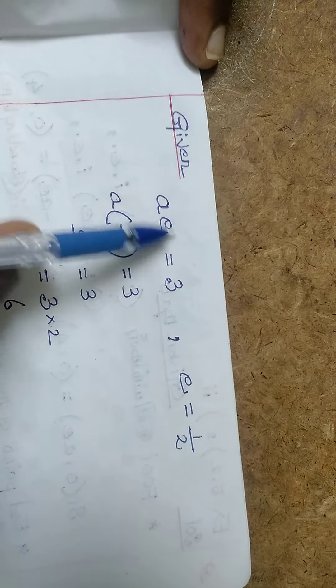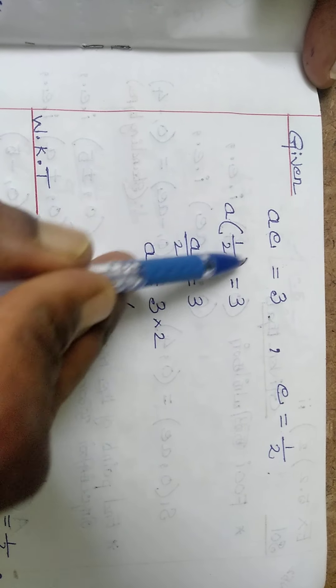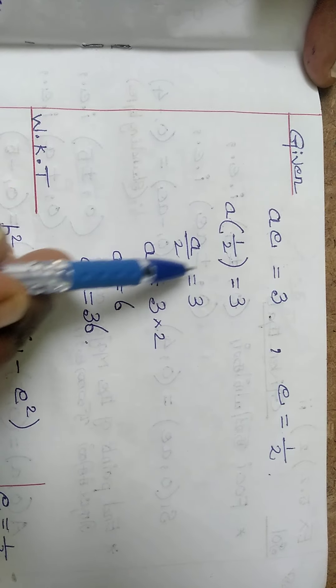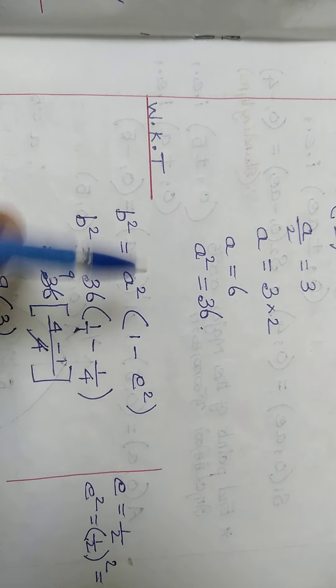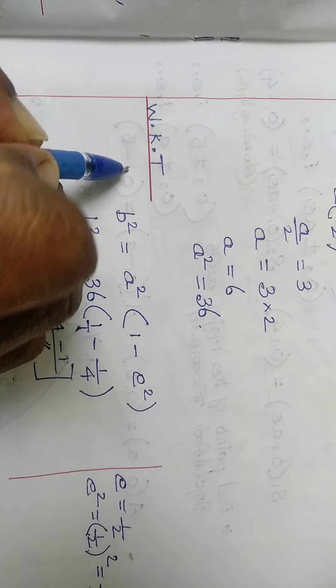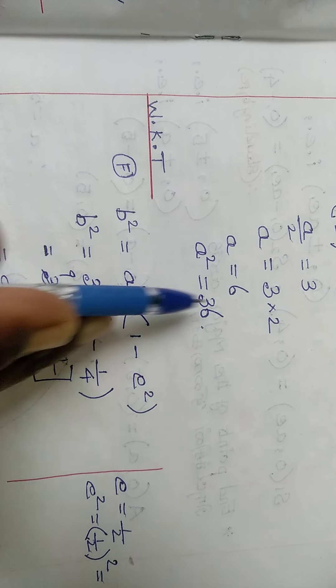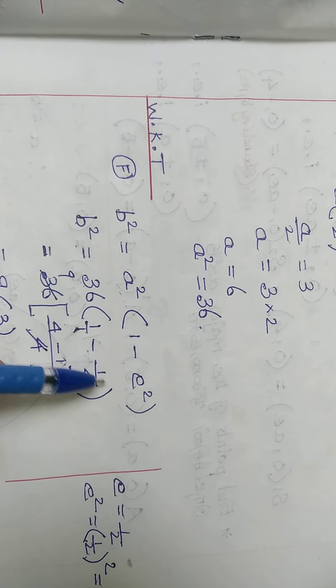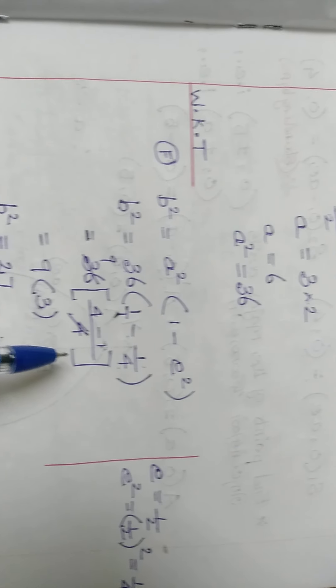Using the formula b squared equals a squared of 1 minus e squared. This is the actual formula. The a squared value is 36 times 1 minus e value. The given e is 1 by 2, so e squared is equal to 1 by 4. Now we do cross multiplication and simplification.